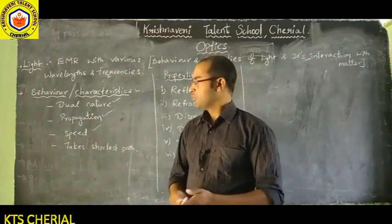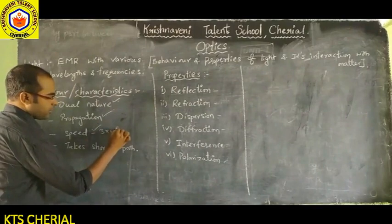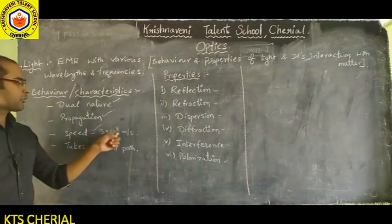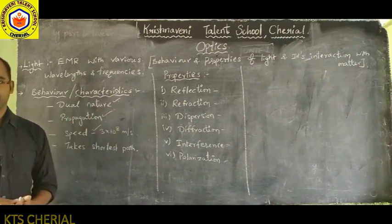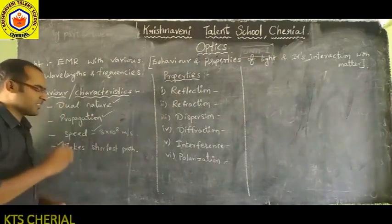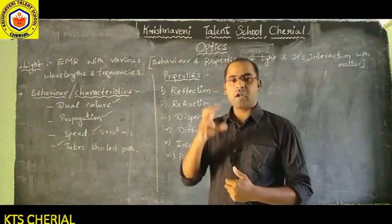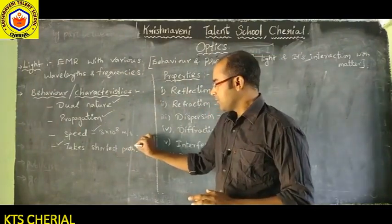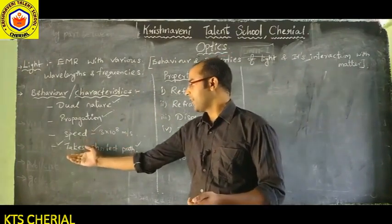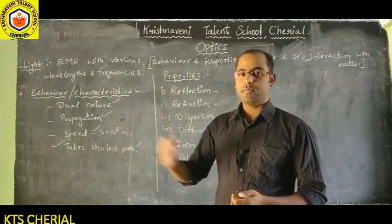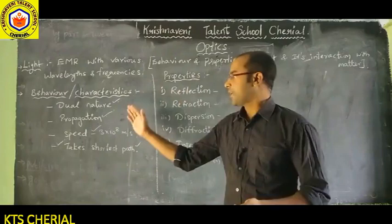The speed of light is 3×10⁸ meters per second, which equals 3 lakh kilometers per second. Light always takes the shortest path to travel, following Fermat's principle, which states that light takes the shortest path from one place to another.